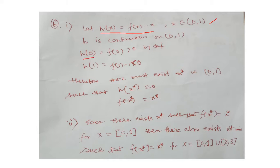h(0) = f(0) > 0, and h(1) = f(1) − 1 < 0. So by a similar argument as discussed in the previous question, there must exist x* in (0,1) such that h(x*) = 0, which means f(x*) = x*.